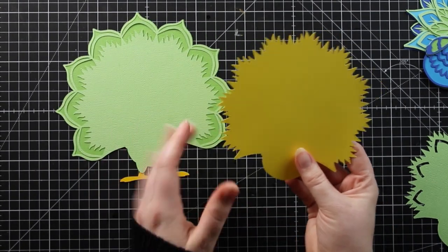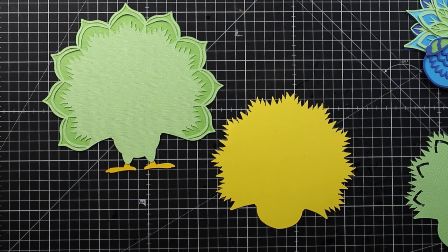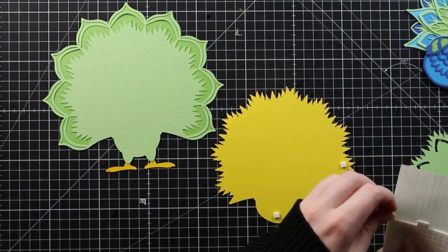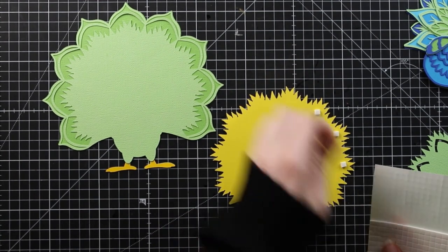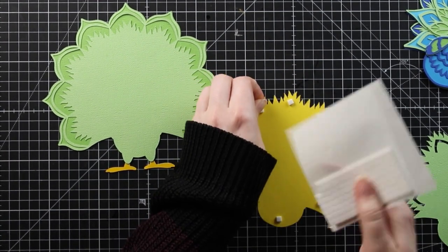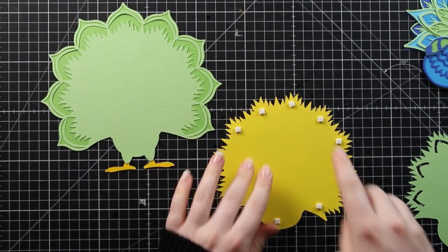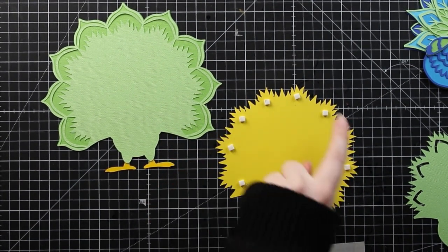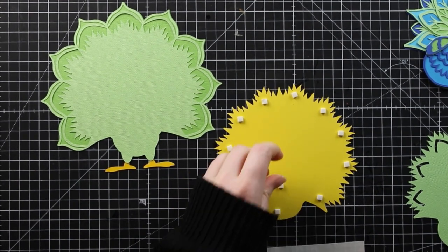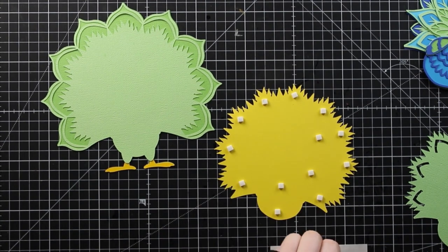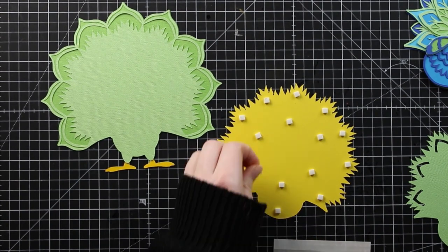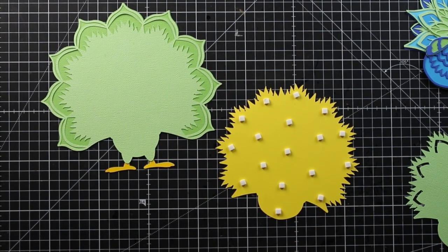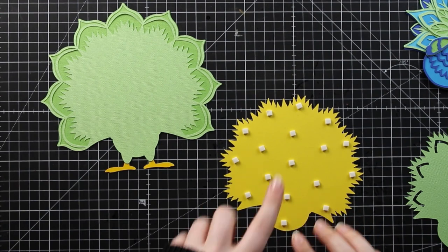For the yellow layer this one's going to be done with foam so I've turned it upside down and I'll get my foam pads to stick on. When you're adding the foam you want to add quite a few because we want this to make sure it's stuck well and that it can hold the weight of all the layers. By adding more foam pads it gives it more stability across the whole shape so you wouldn't want to leave it just with foam around the edge because then your cardstock will sag in the middle under the weight. That's why I've put lots in the middle as well as around the edge.